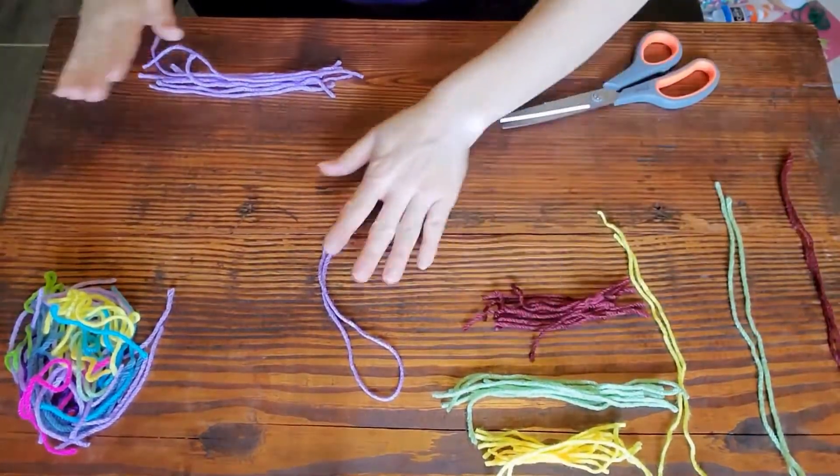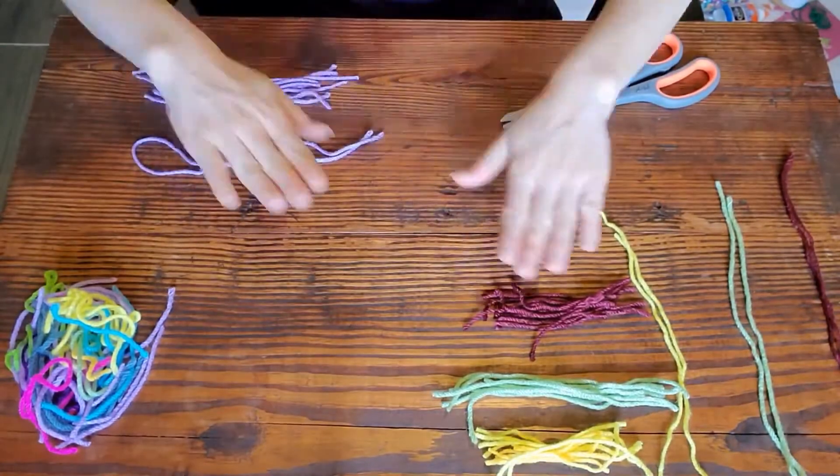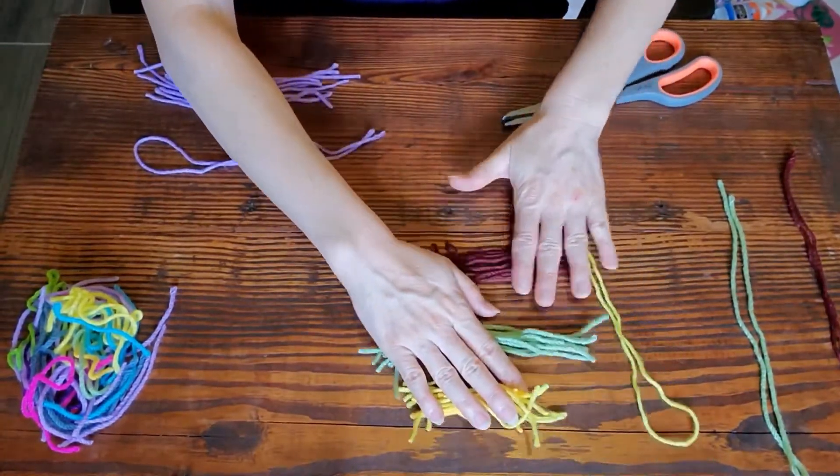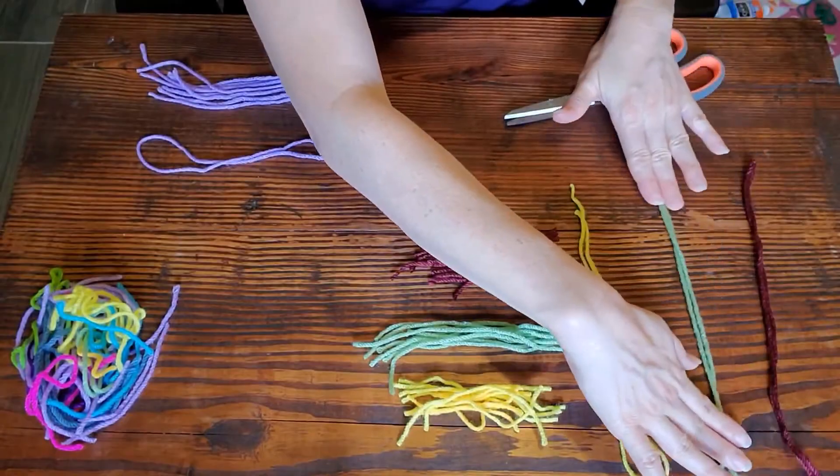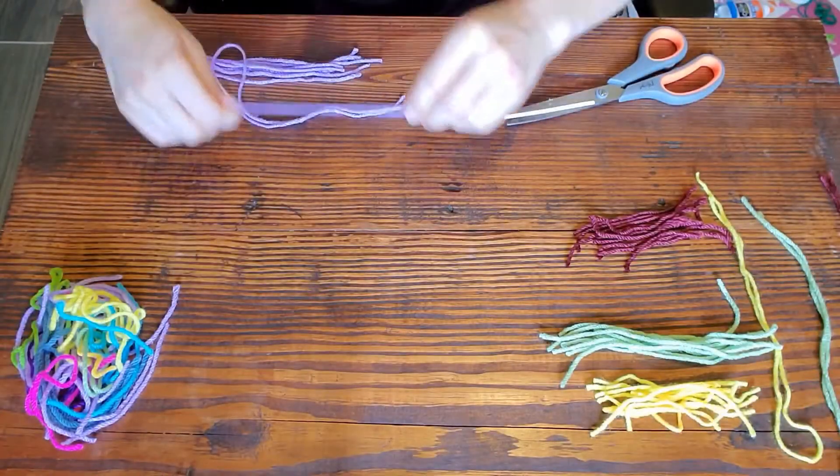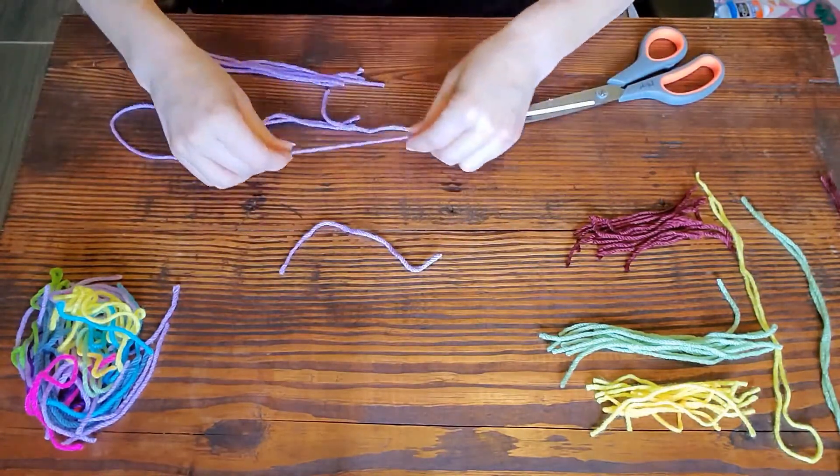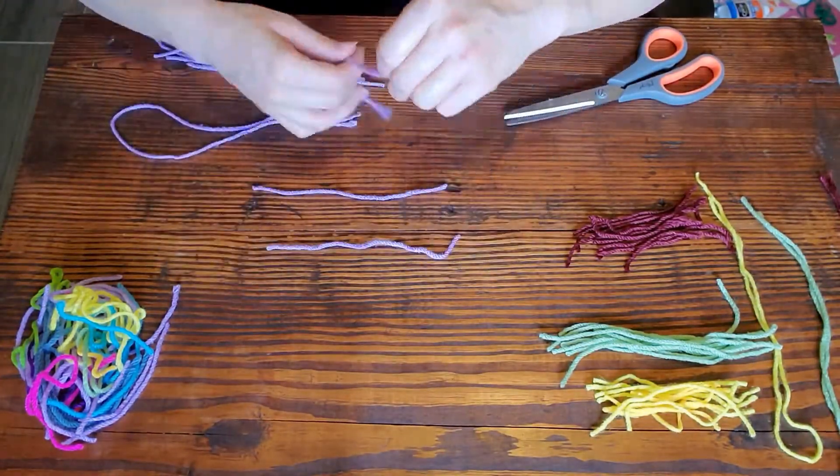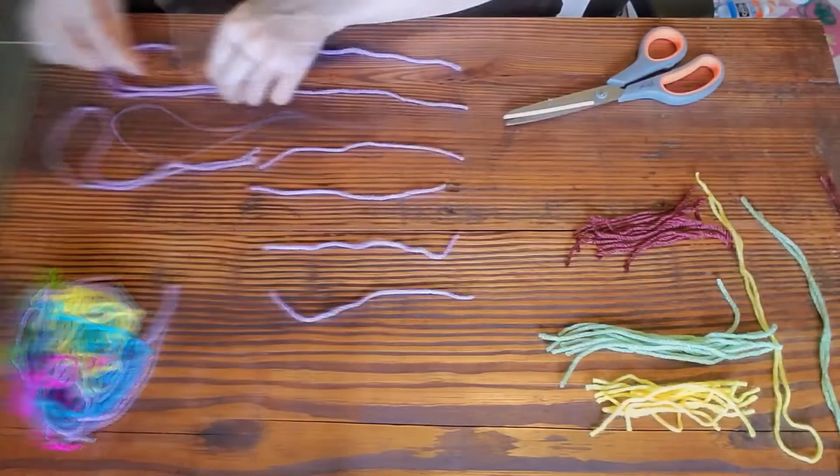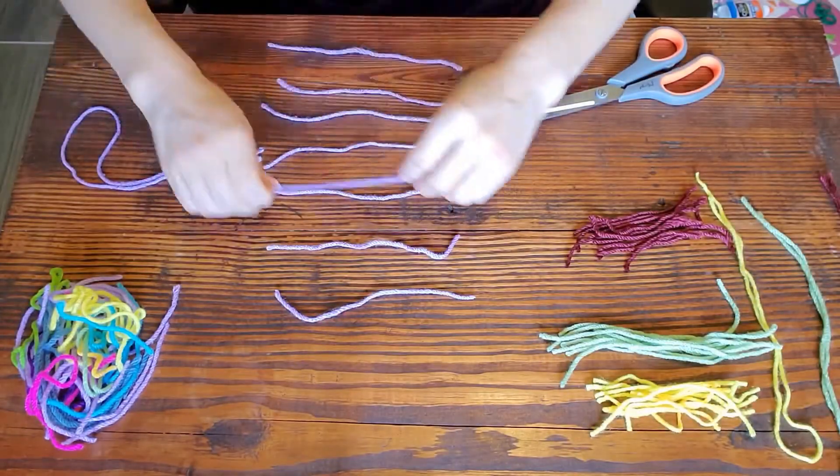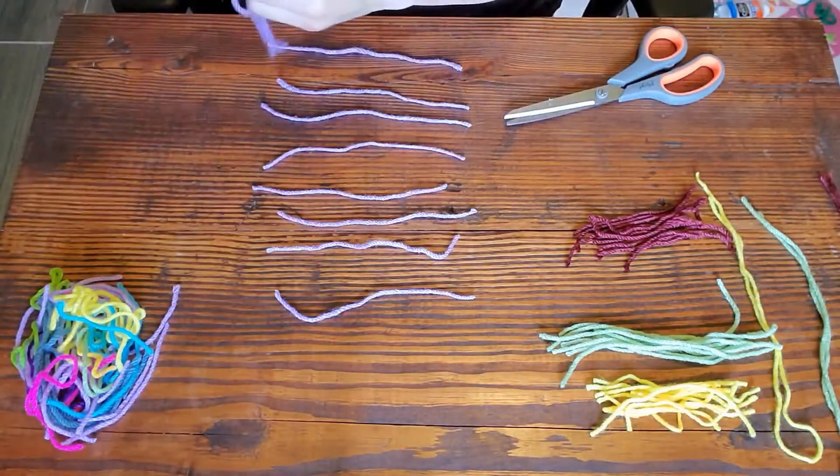So here I have chosen my colors. I have my purple, and then I have yellow, green, and a maroon color. So I'm going to start with my first feather, and I'm going to lay all of my pieces down in lines, and you can add more than eight if you want, but eight is probably about good.